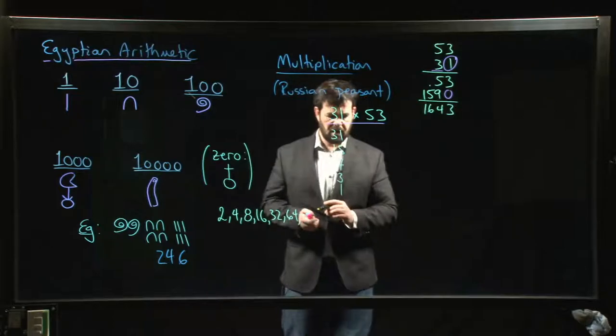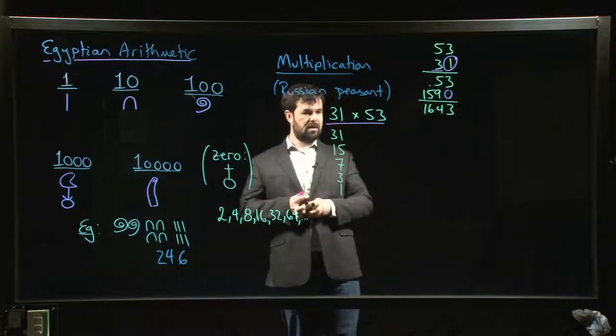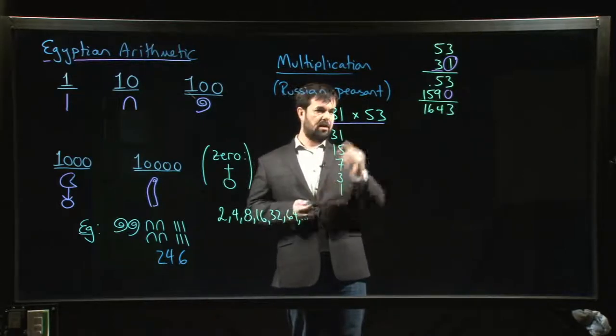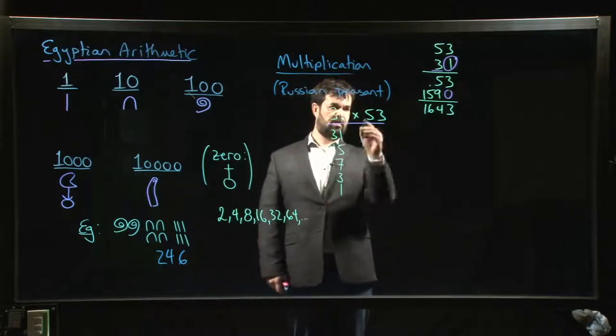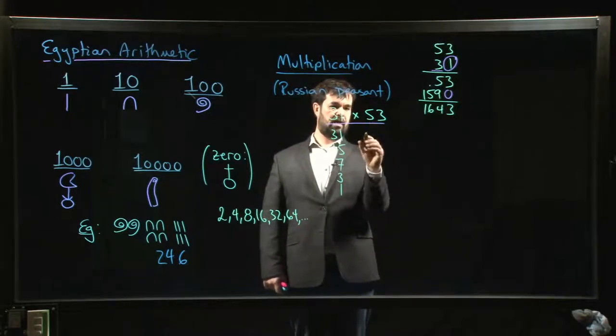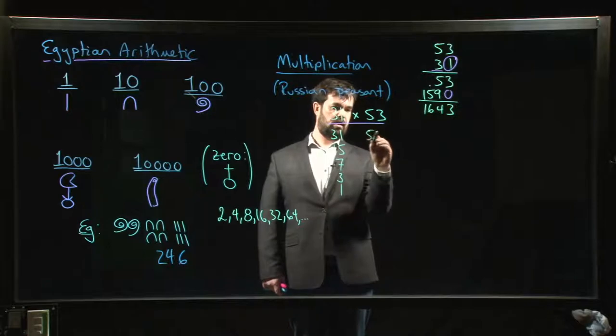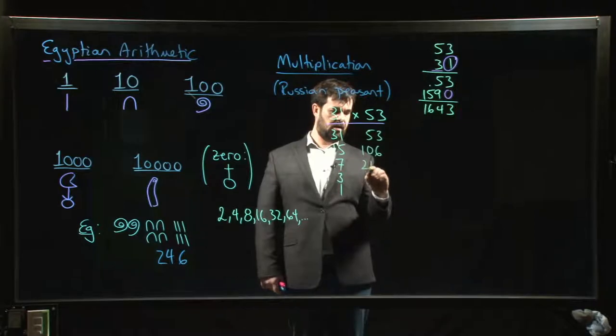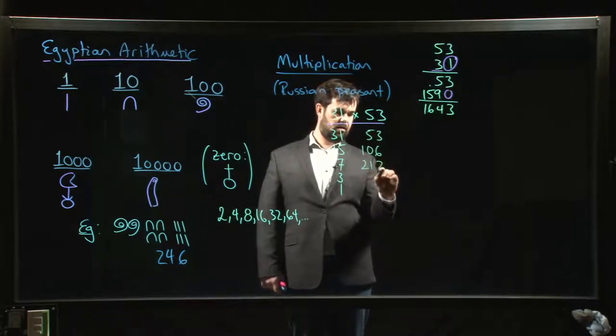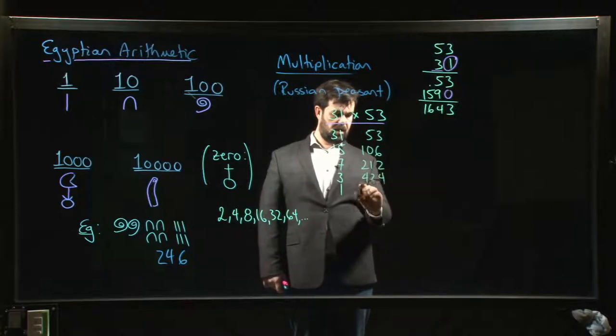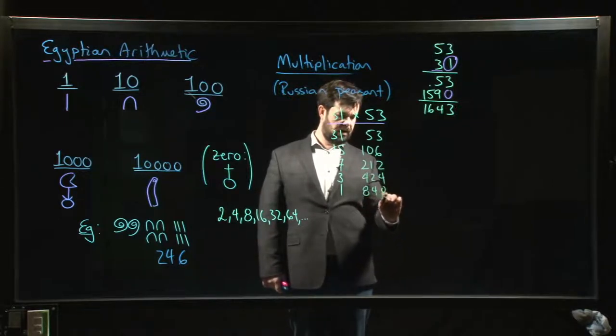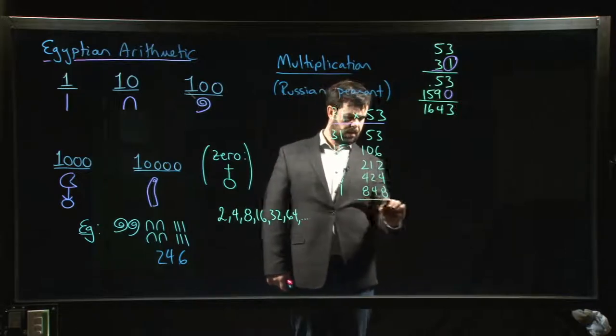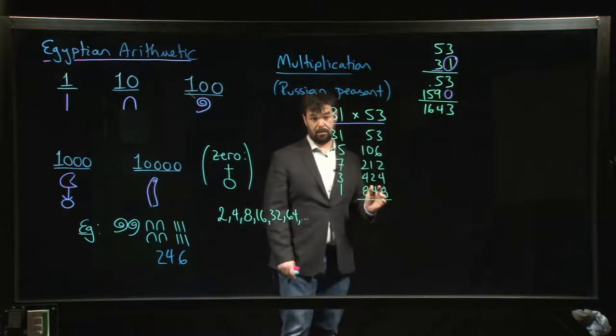For each halving that you did on one side, you do a doubling on the other side. I take 53 and just write it down, then I double it: 106, I double it again: 212, I double it again: 424, I double it one more time: 848. Then I add up the results.